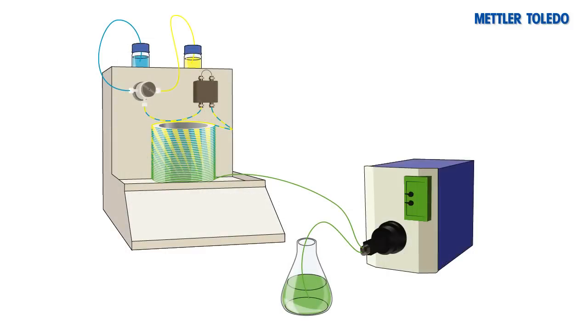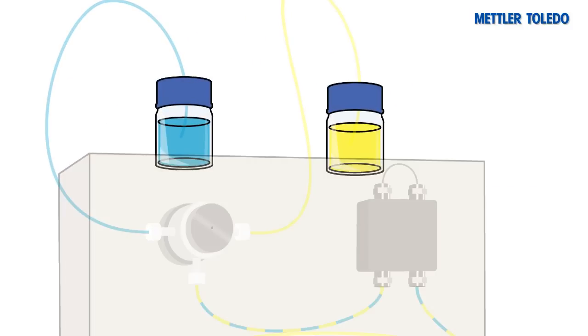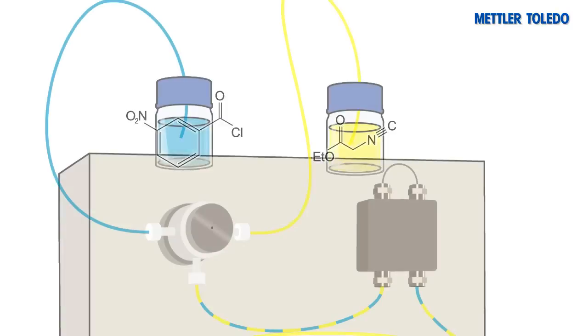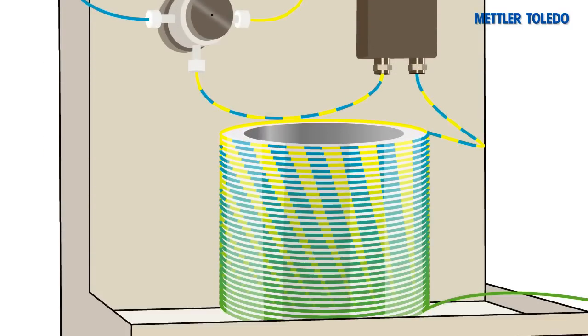In its simplest form, continuous flow chemistry begins with two or more streams of different materials, for example starting material and reactants, that are pumped at predetermined flow rates into a single chamber, a tube, or in some cases a microreactor, which contains very small channels where the flowing material mixes and reacts with one another.